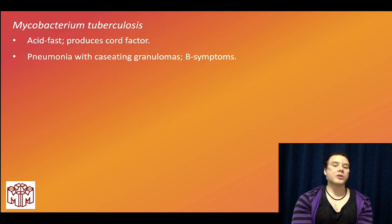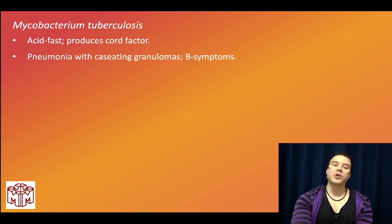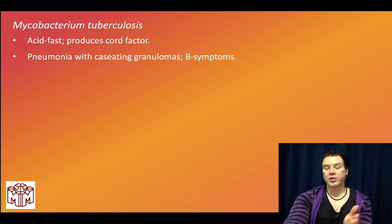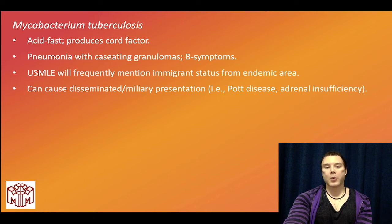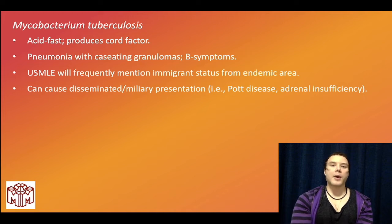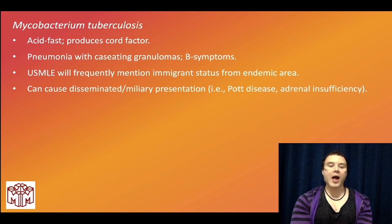TB questions can present with B symptoms: night sweats, fever, weight loss in a patient with a pulmonary condition. It can sound like lung cancer but it's TB much of the time. Be mindful of demographics — immigrant status. A miliary or disseminated presentation can produce unusual TB pathologies such as psoas abscess, vertebral column involvement (Pott's disease), and adrenal insufficiency, which can present similarly to disseminated histoplasmosis.